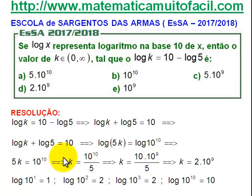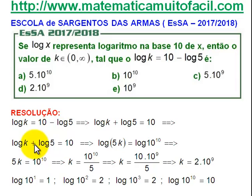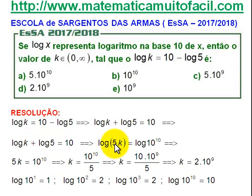Eu tenho que dar um jeito de perceber o seguinte: eu posso escrever isso na forma de um logaritmo. Eu tenho aqui uma adição de dois logaritmos. Eu sei que isso nasceu do logaritmo de um produto — logaritmo de K vezes 5, ou seja, log de 5K.